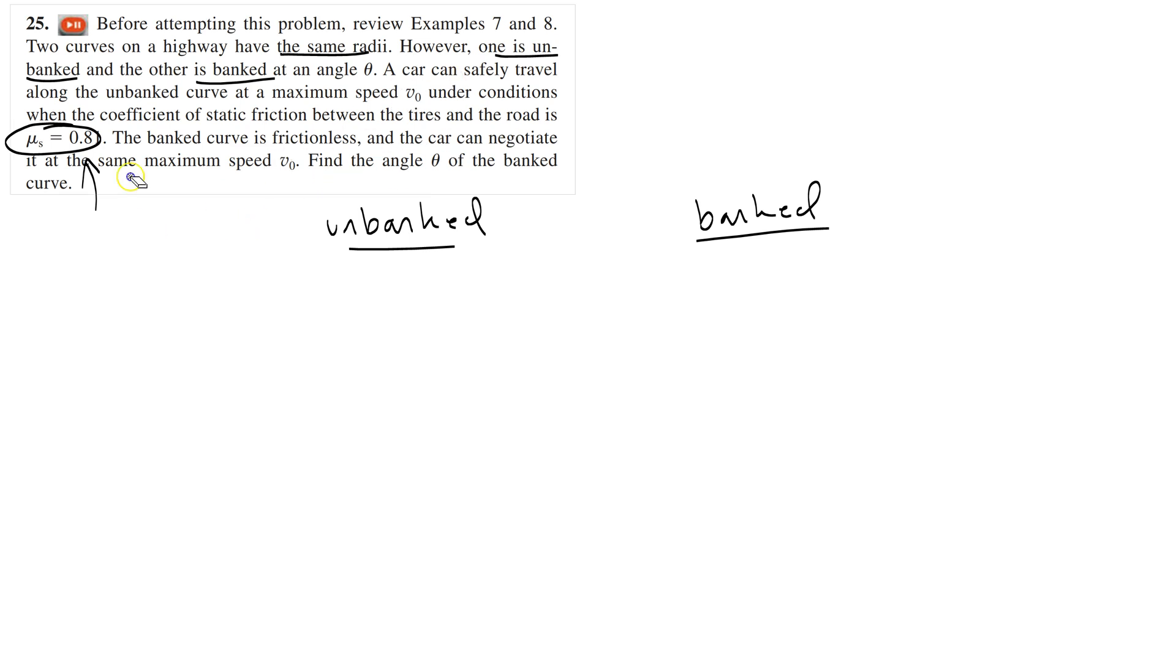For the unbanked problem, your centripetal force is the force of friction so you would write friction equals Mv squared over R therefore mu Mg equals Mv squared over R because if you think about the car as it's driving it will have the weight down, the normal force up, so the normal force equals the weight and the force of friction is your centripetal force and the force of friction is always mu times the normal force so you would make this mu Mg. So that's where I'm getting this friction from to then turn into mu Mg.